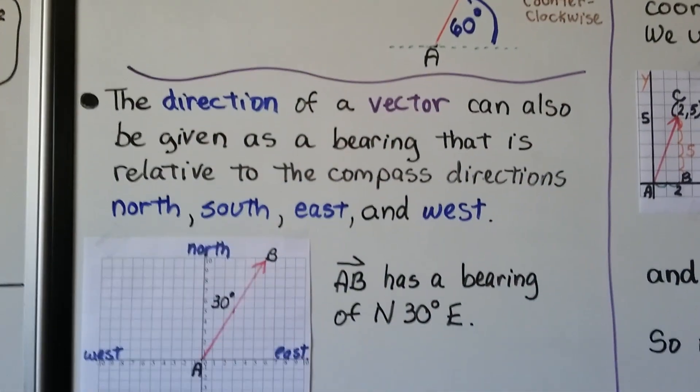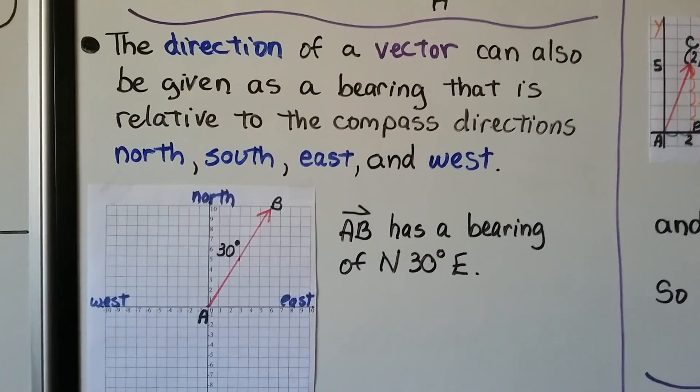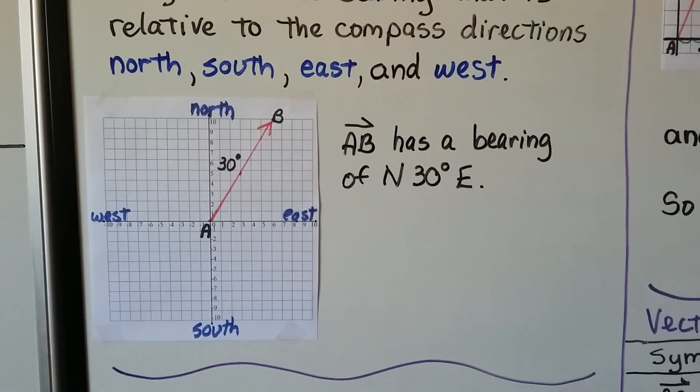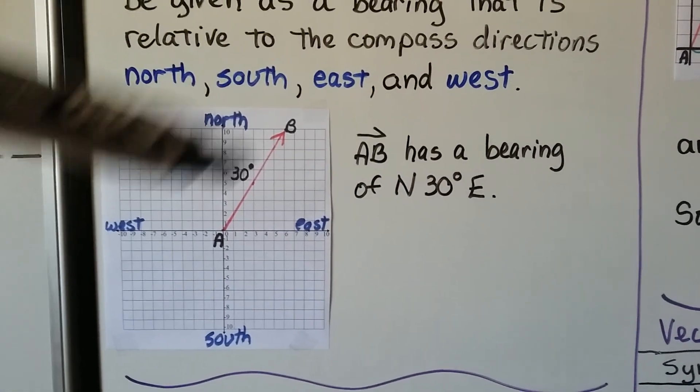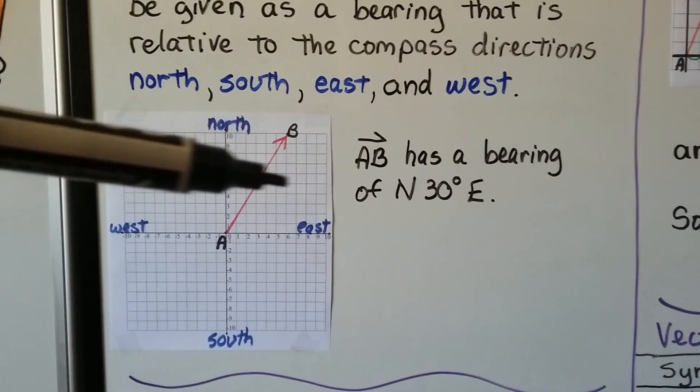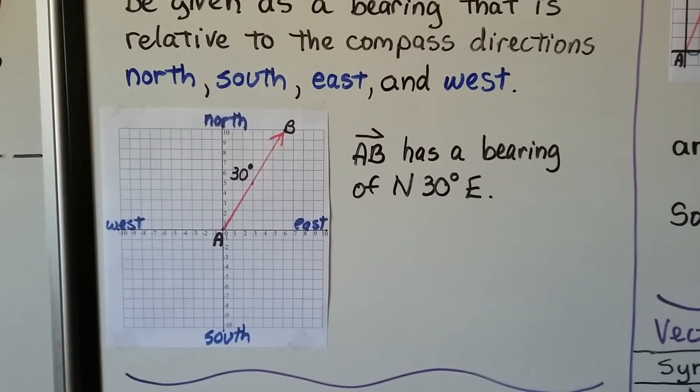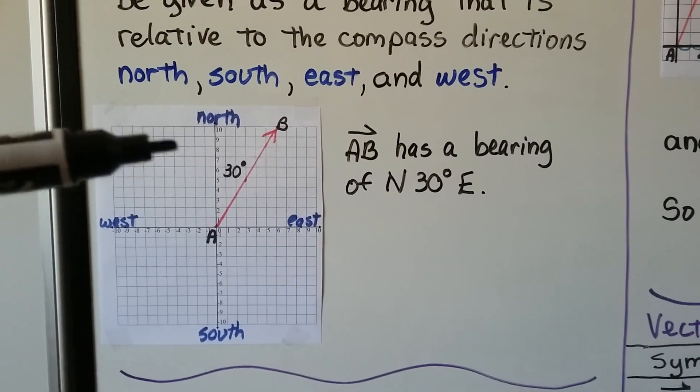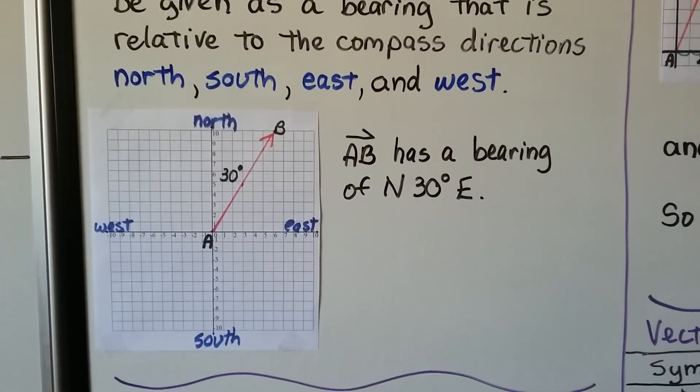And the direction of a vector can also be given as a bearing that is relative to the compass directions north, south, east, and west. Here we have vector AB. It has a bearing of north, 30 degrees east. So it's going north, but it's also going 30 degrees east.